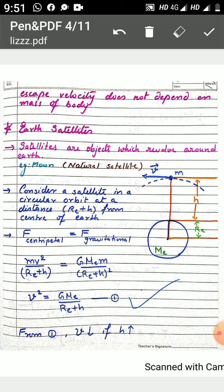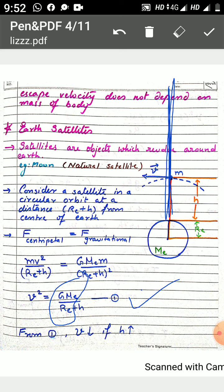From this equation, G, M_e, and R_e are all constants, so the only variable is h. You can see that velocity and h are inversely proportional to each other. So if we increase the height h from the surface of Earth, the velocity or speed of the satellite will decrease.